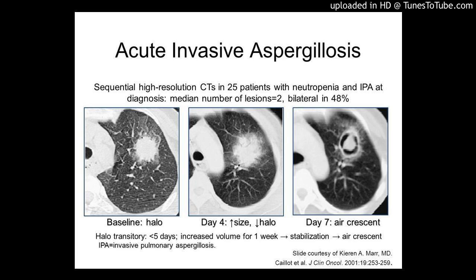Pathology depends on the immune status and varies from granuloma with fibrosis or suppuration to abscess or infarction. The risk factors and the interplay of host and pathogen in the pathogenesis of invasive aspergillosis are reviewed.